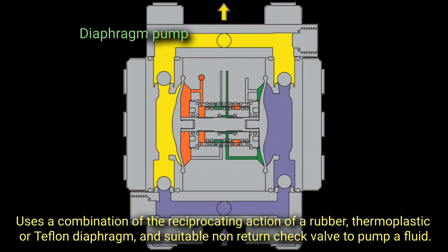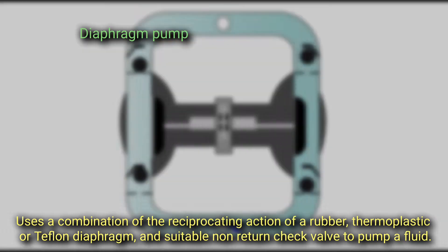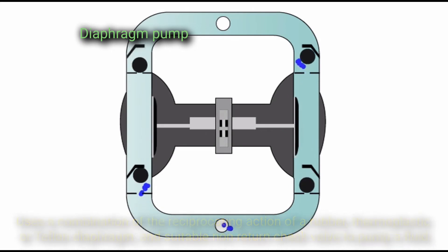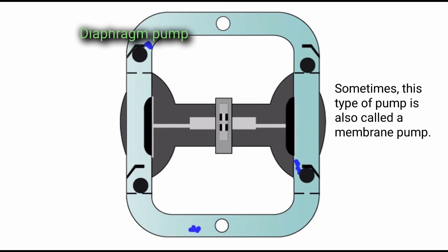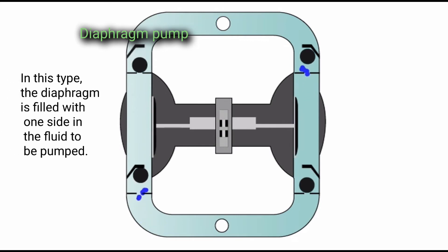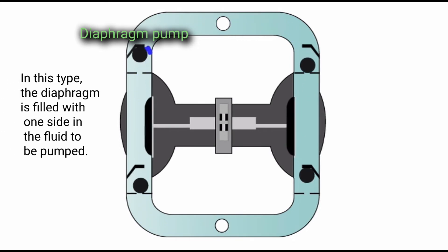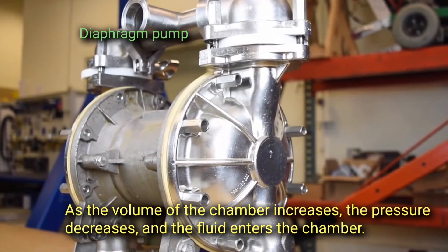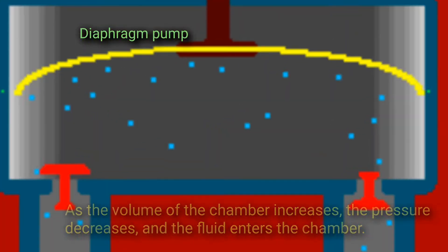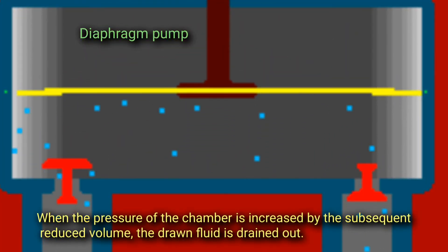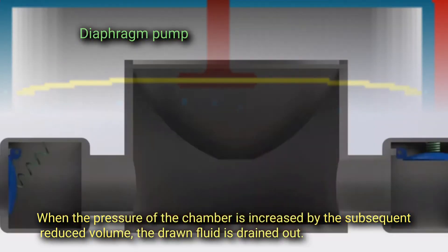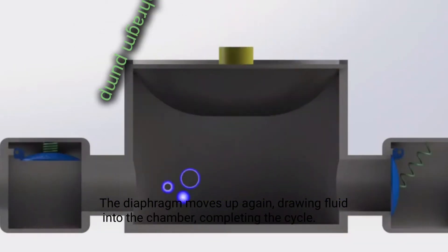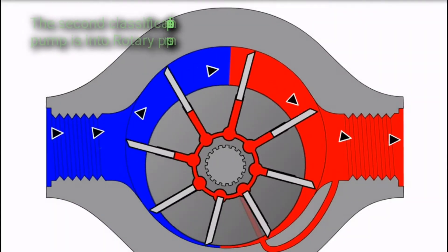A diaphragm pump uses a combination of the reciprocating action of a rubber, thermoplastic, or Teflon diaphragm and suitable non-return check valves to pump a fluid. It is sometimes called a membrane pump. In this type, the diaphragm is filled with fluid on one side. As the volume of the chamber increases, the pressure decreases and fluid enters the chamber. When pressure is increased by the subsequent reduced volume, the drawn fluid is drained out, and the diaphragm moves up again — completing the cycle.